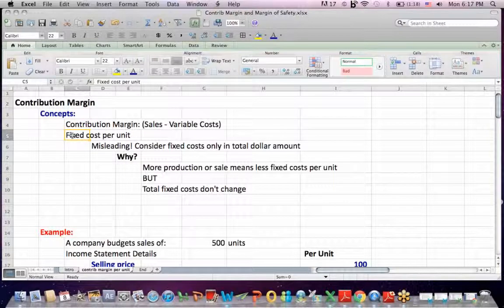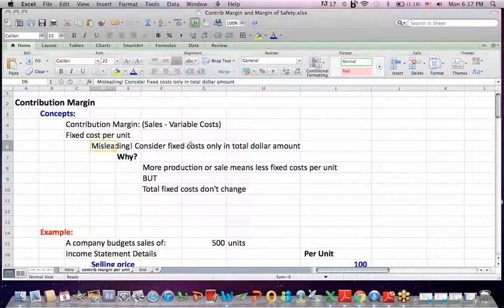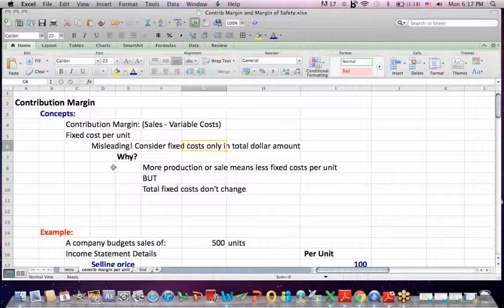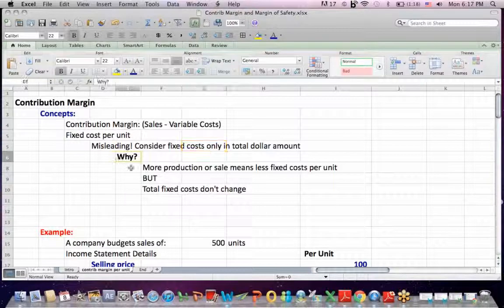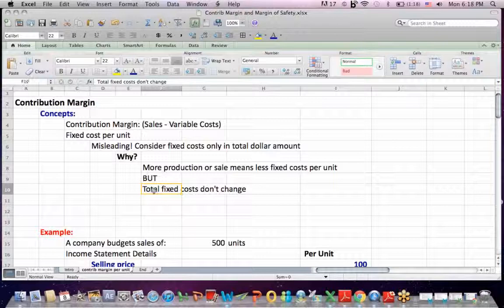It brings up another point, which is that looking at fixed costs on a per unit basis can be misleading. It's much better as a manager to look at fixed costs only in terms of total dollar amount. And here's why. You have to cover fixed costs no matter what. Fixed costs don't change.